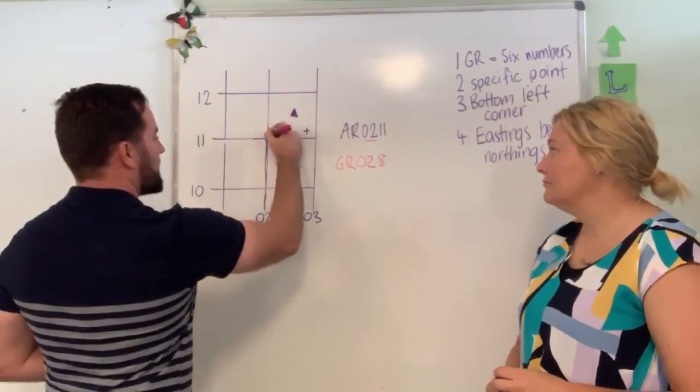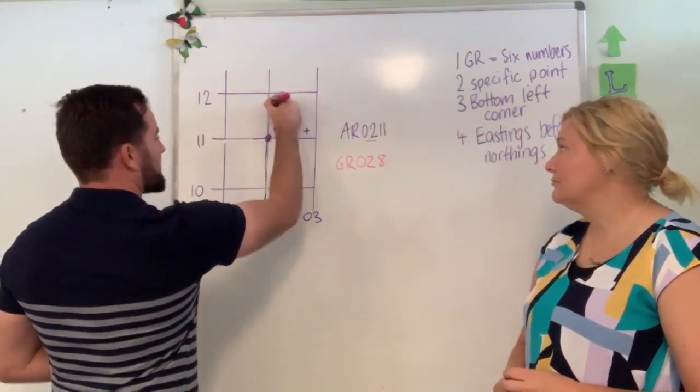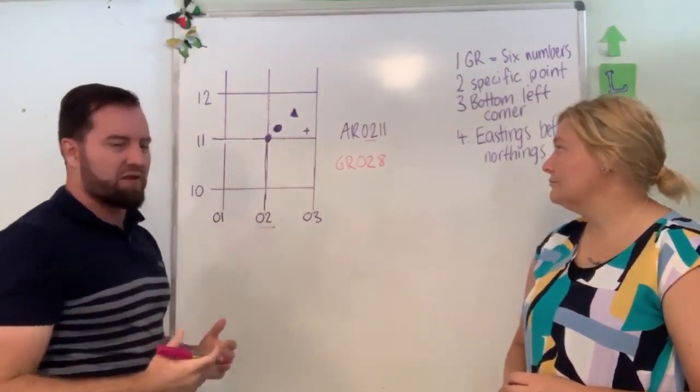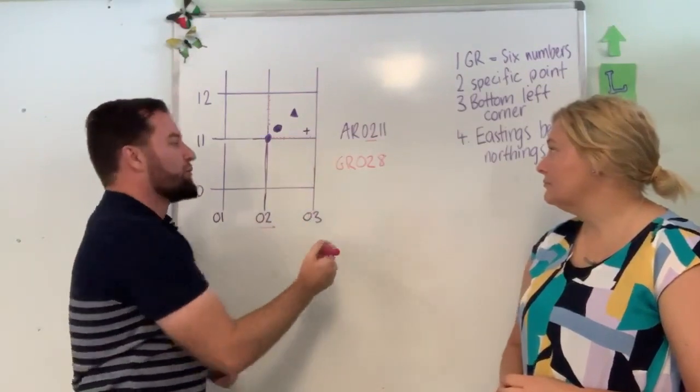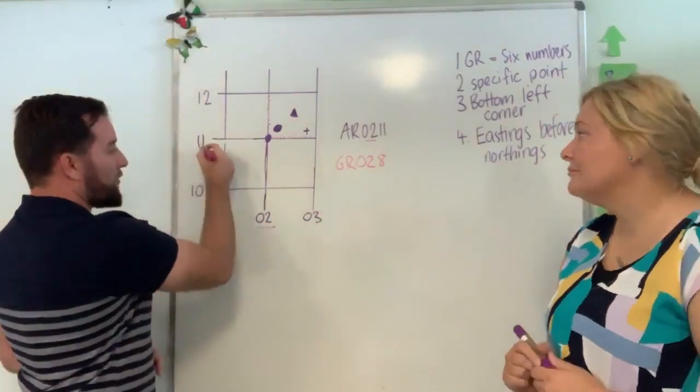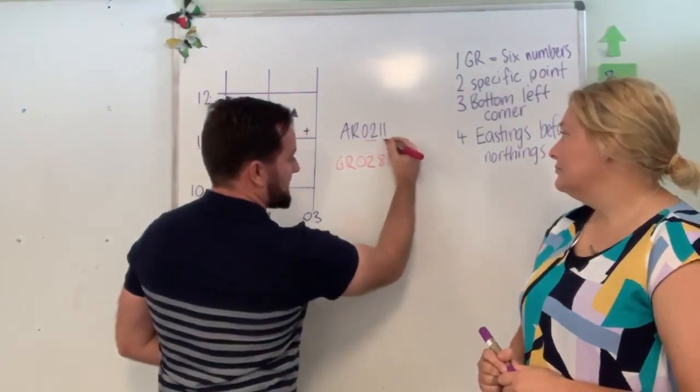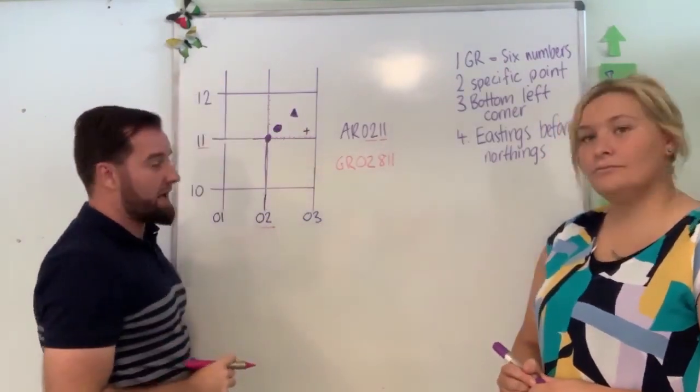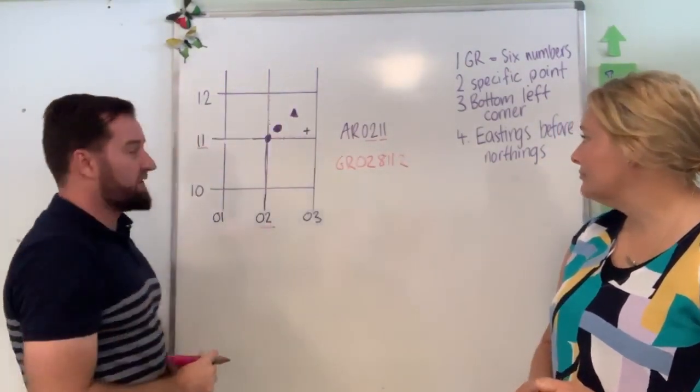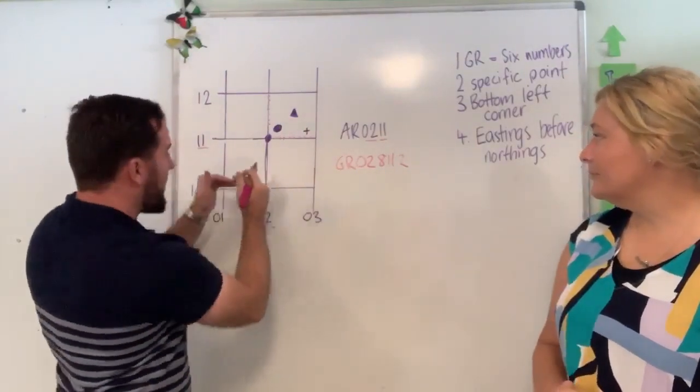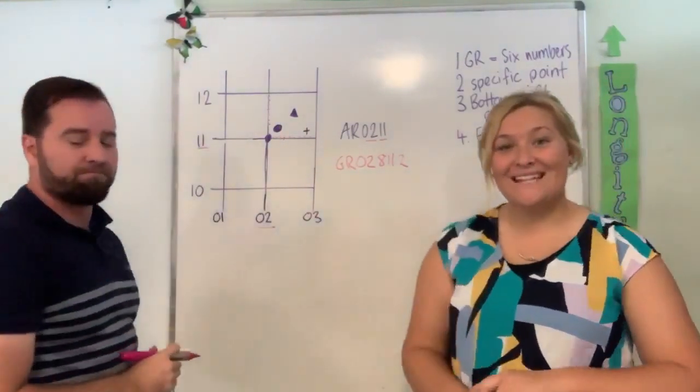We then do the exact same thing with our northings. We break it into 10. 1, 2, 3, 4, 5, 6, 7, 8, 9, 10. Obviously I'm doing this a little bit quick. But then here is probably about 2. So we use 11, same as our area reference again. And then we just add 2 to be more specific. How far across is it? How high up the box is it?